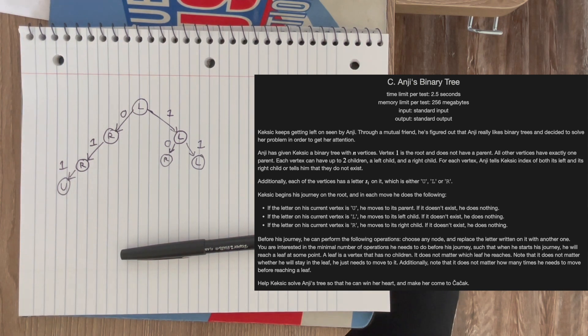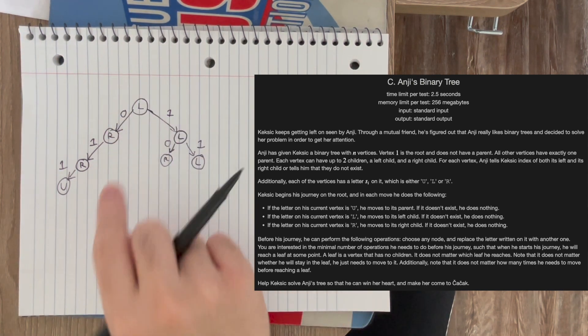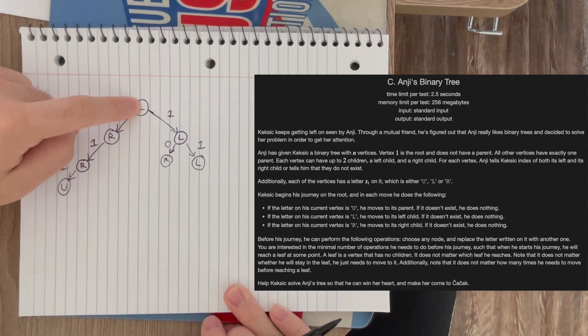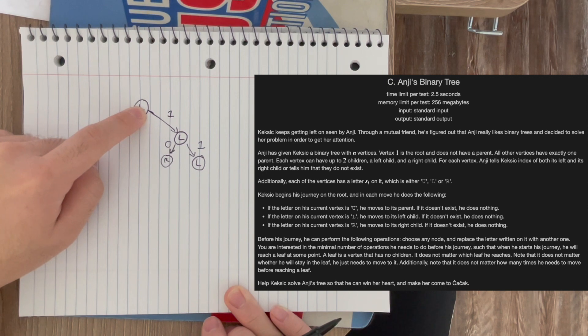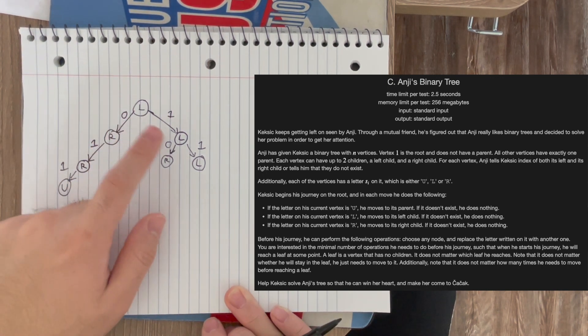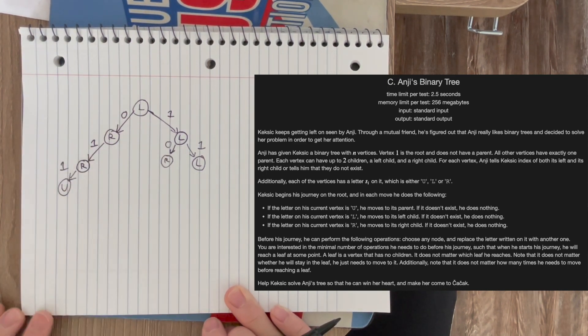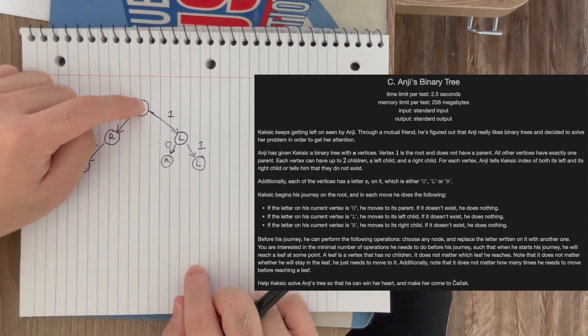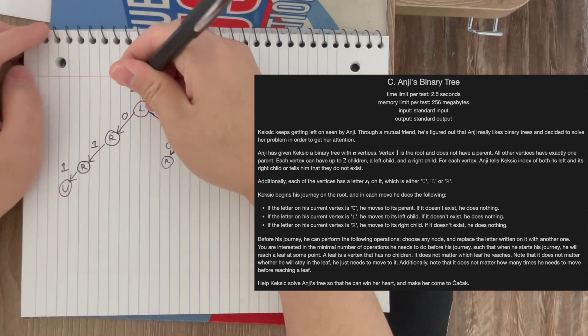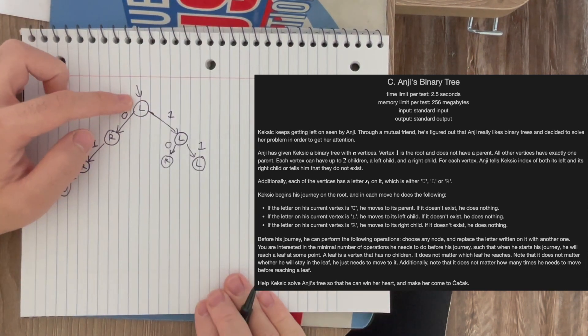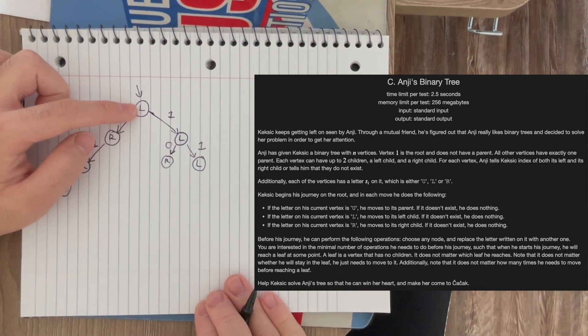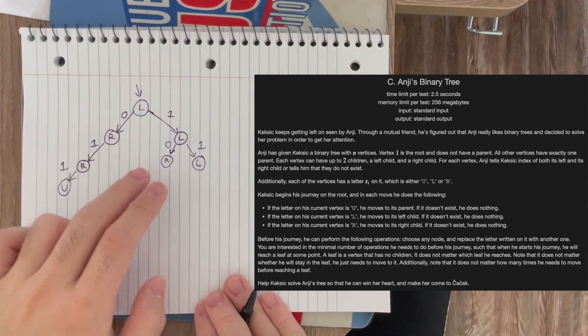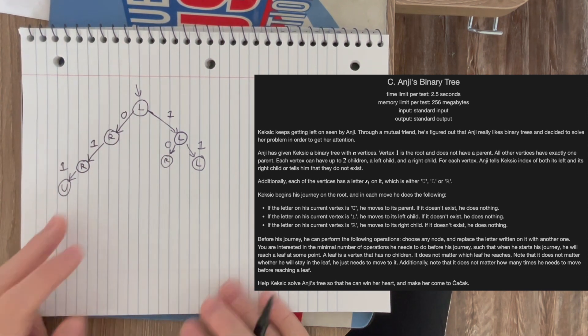So after we construct these edges, the problem now becomes, if we were to start at the root, what is the shortest path that we can take to any leaf in this tree? So in other words, we can do a BFS or some sort of shortest path algorithm from this root, and we can terminate once we find the closest possible leaf in this search.